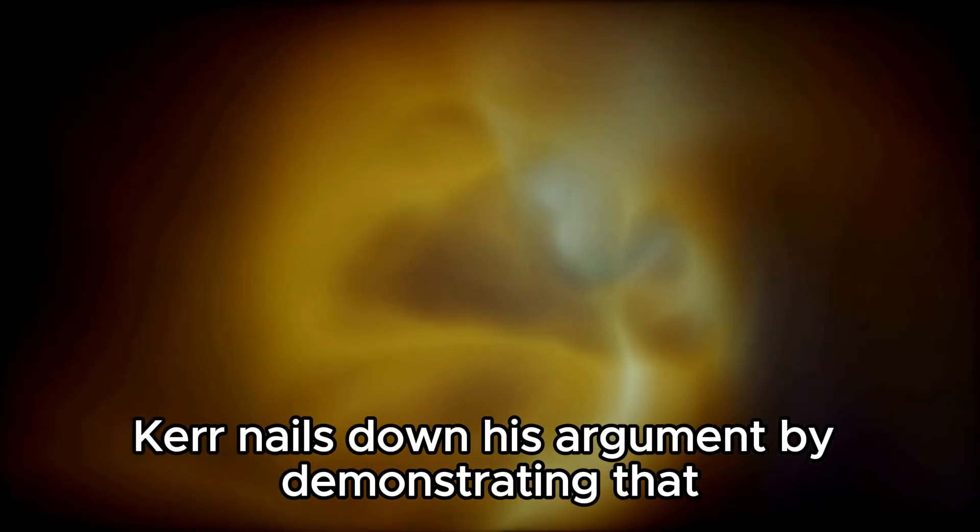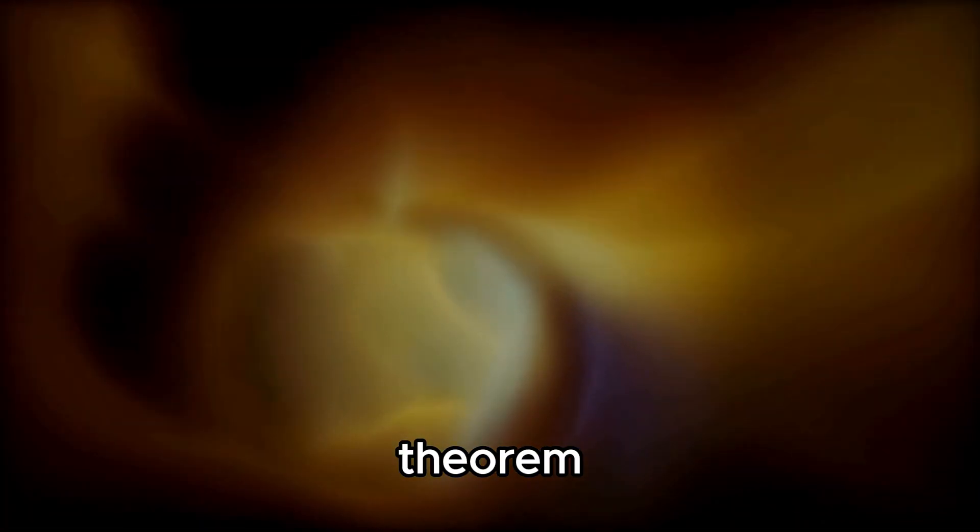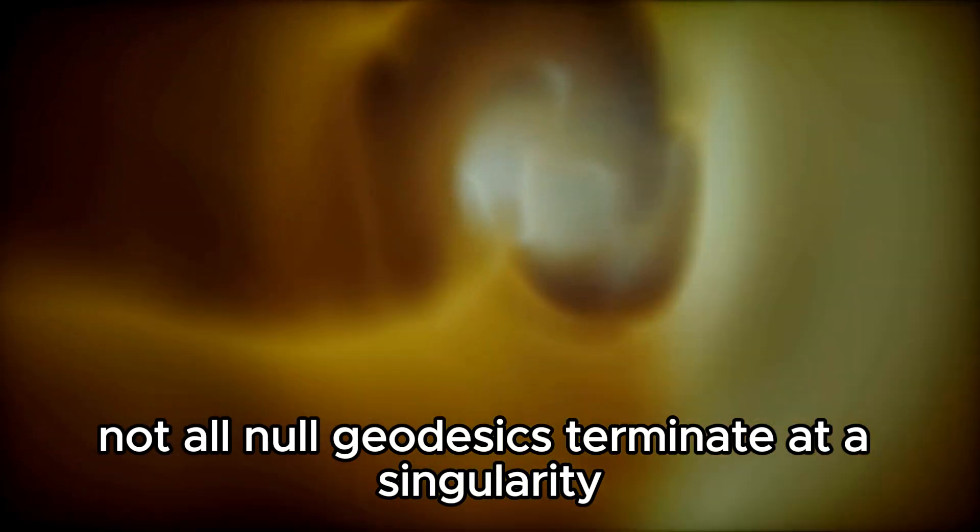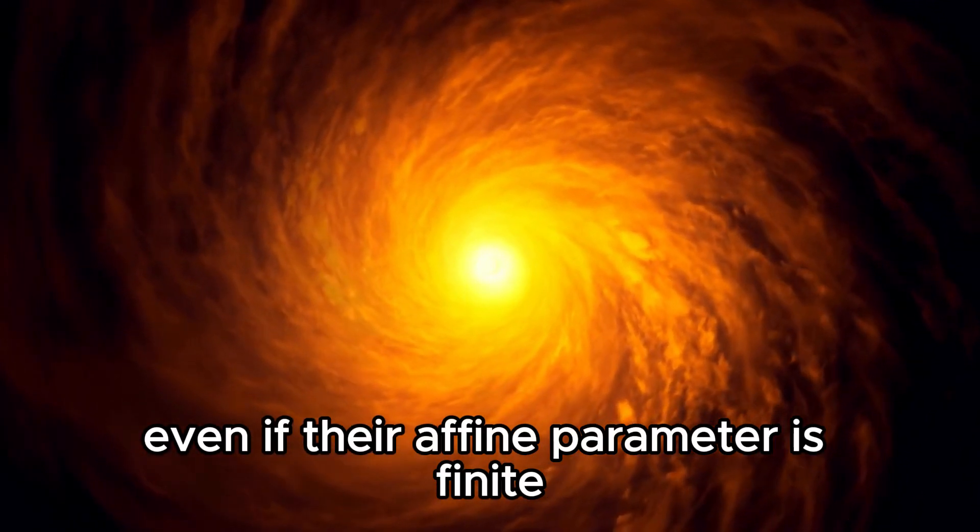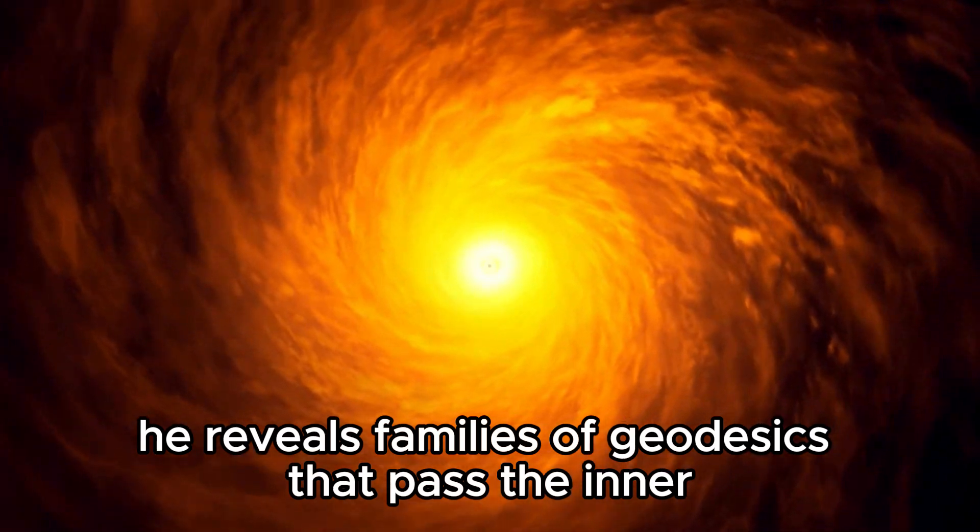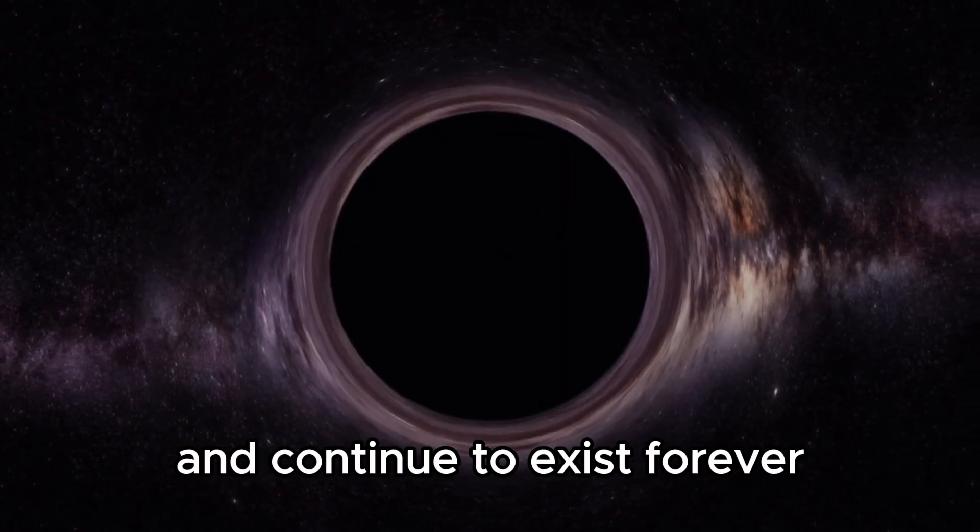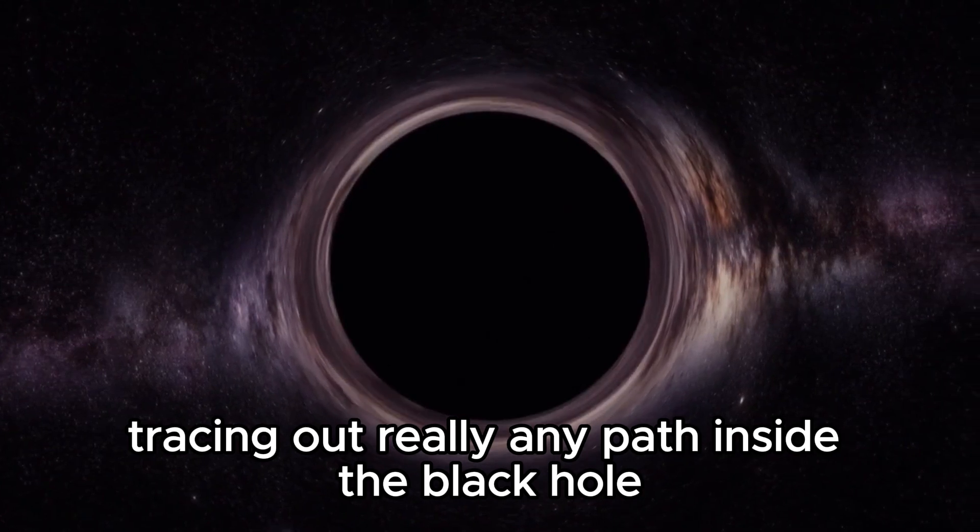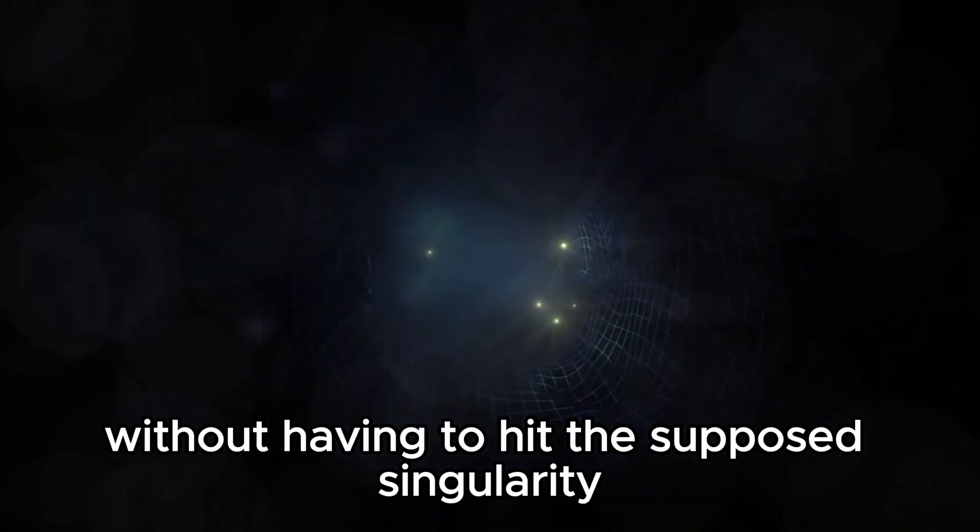Kerr nails down his argument by demonstrating that, contrary to the conclusion of the Penrose singularity theorem, not all null geodesics terminate at a singularity in the Kerr black hole. Even if their affine parameter is finite, he reveals families of geodesics that pass the inner event horizon of a Kerr black hole and continue to exist forever, tracing out really any path inside the black hole without having to hit the supposed singularity and stop existing.